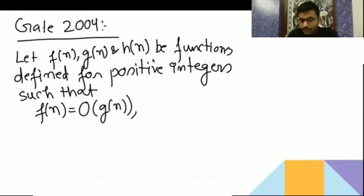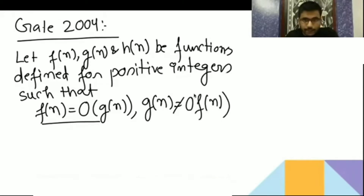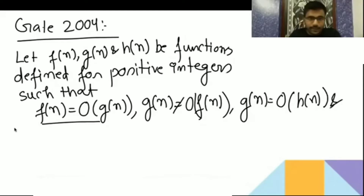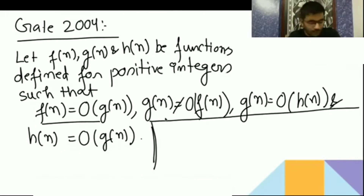What is F(n), what is G(n), and what is H(n) — they are not saying anything specific. It is defined for positive integers such that F(n) is equal to big O of G(n), G(n) is not equal to big O of F(n). And G(n) is equal to big O of H(n), and H(n) is equal to big O of G(n). Now they are asking which of the following statements is false.